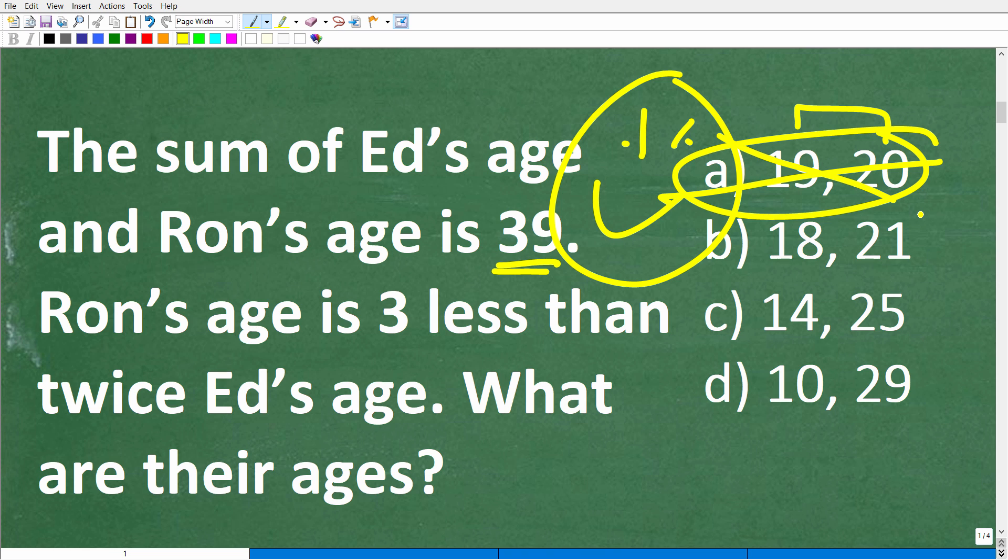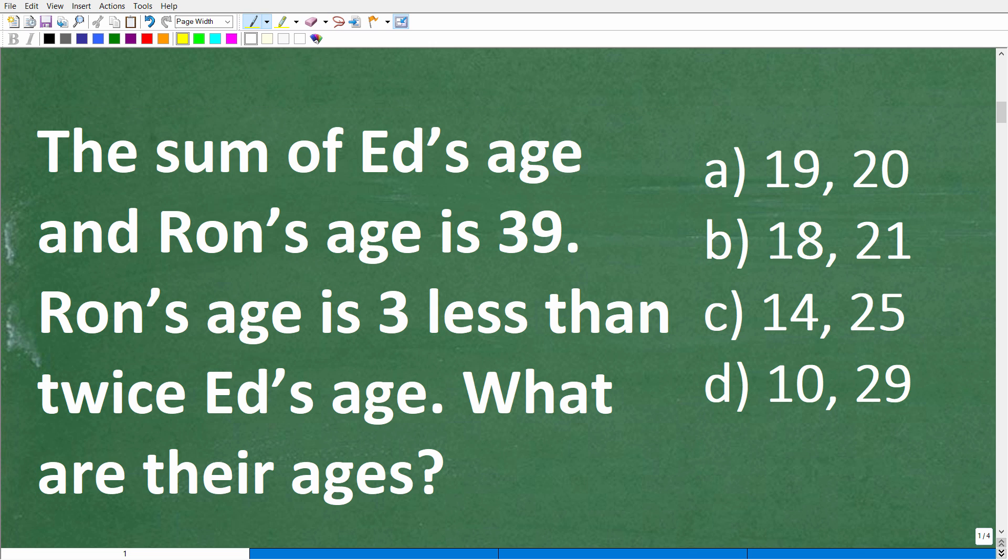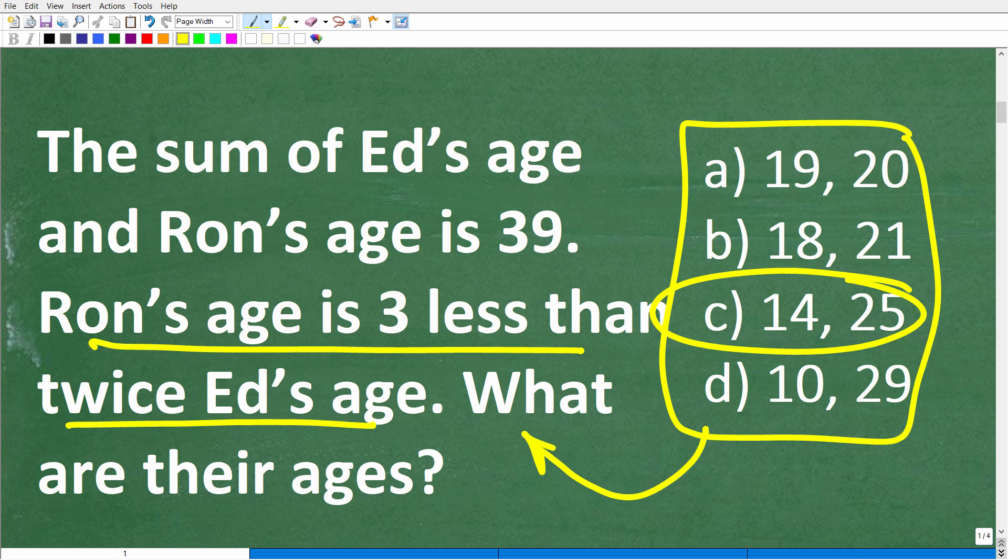So the only way to figure this thing out is to do the algebra or you could have interpreted the problem correctly because if you understand this part of the problem, Ron's age is three less than twice Ed's age, you could have kind of figured out that this would have been the right answer. So you can very often use the answers in a multiple choice question to figure out the correct answer or the correct solution to the problem. So instead of just blindly guessing, if you don't know what to do, think about it a little bit more and see if you can at least narrow your guess down to two choices, not four.